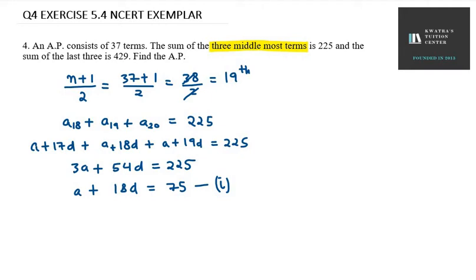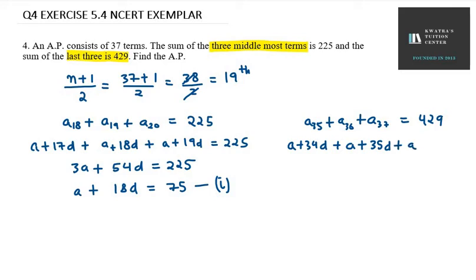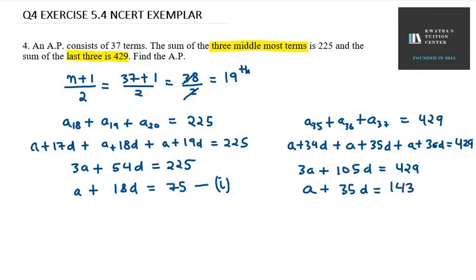The second part tells us the sum of the last 3 terms is 429. The last three terms are A35, A36, and A37. So we write: (a + 34d) + (a + 35d) + (a + 36d) = 429, which gives 3a + 105d = 429. Taking 3 common, we get a + 35d = 143. This is our second equation.